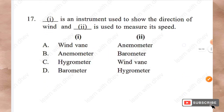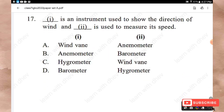Question 17: Which instrument is used to show the direction of wind, and which is used to measure its speed? A wind vane shows the direction of wind, and an anemometer is used to measure its speed. Option A is the right answer.